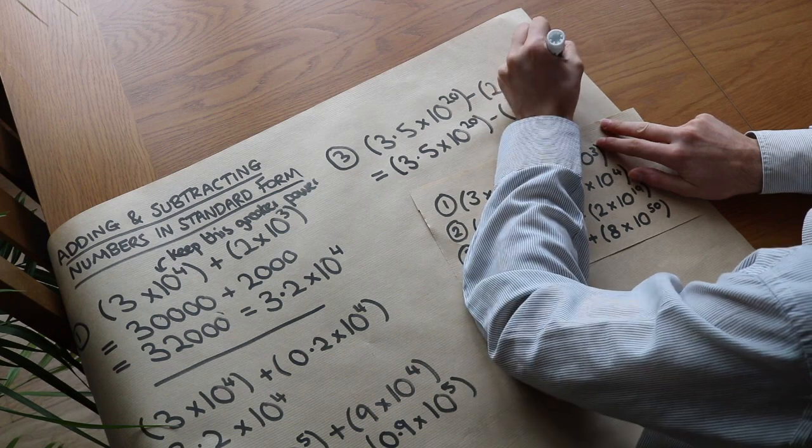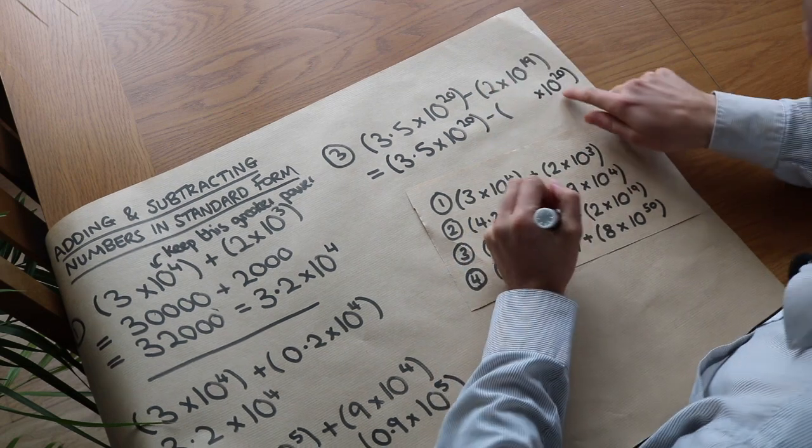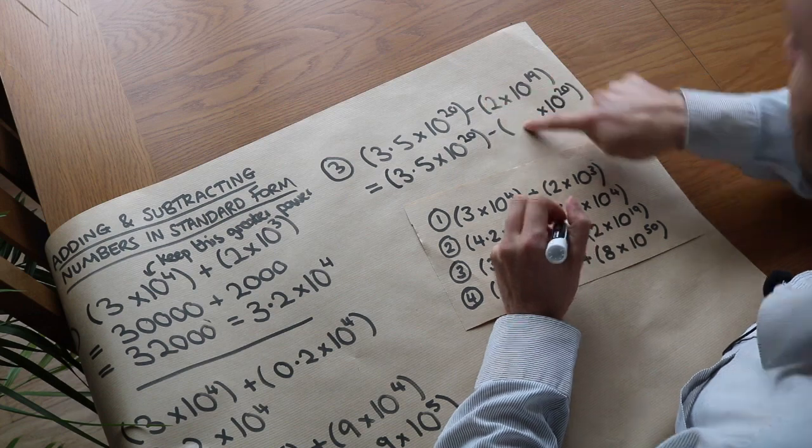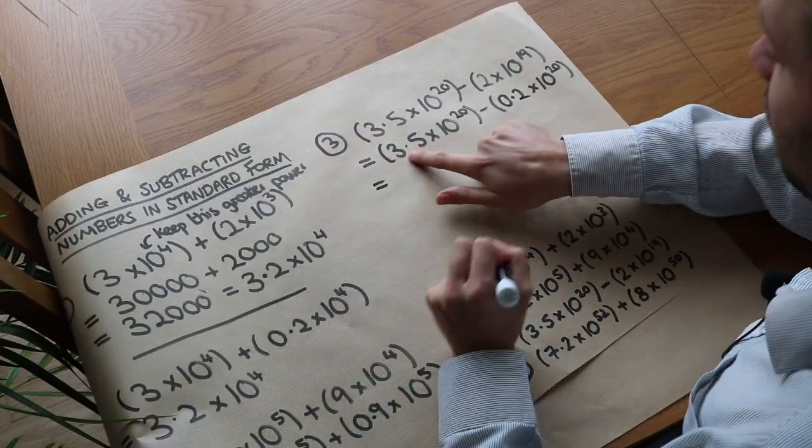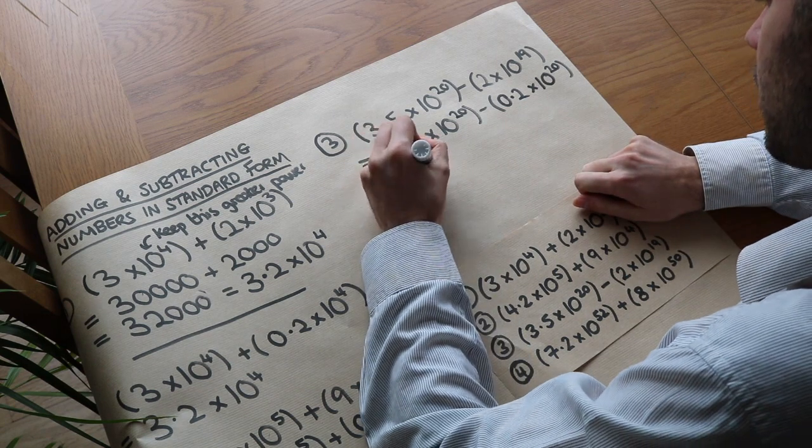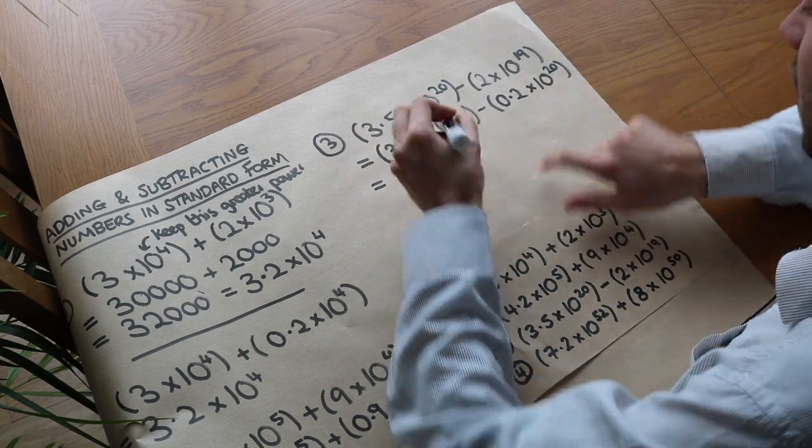So we want 10 to the power of 20. Change it to the higher power. So that got 10 times bigger. That has to get 10 times smaller to compensate. We've got 0.2. And now we can just do 3.5 minus 0.2, which is 3.3 times 10 to the 20.